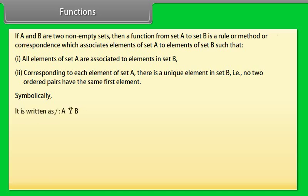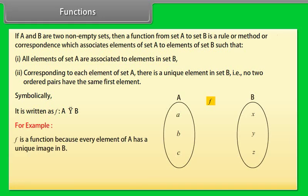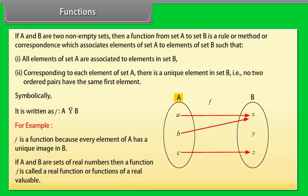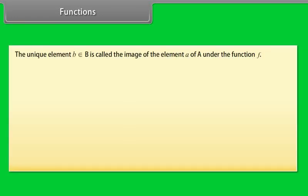Symbolically, F is a function from A to B. F is a function because every element of A has a unique image in B. If A and B are sets of real numbers, then a function F is called a real function. The unique element b belonging to B is called the image of element a of A under the function F, denoted by F(a), that is, b = F(a).